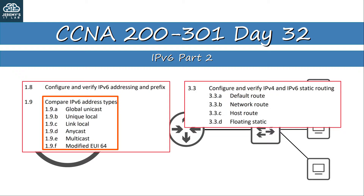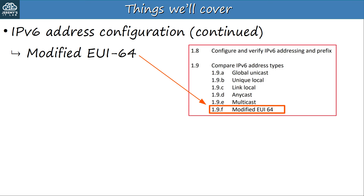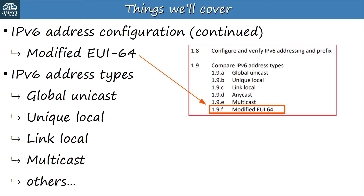Here's what we'll cover. First up we'll continue with the topic of IPv6 address configuration. I'll show you one more way to configure an IPv6 address on an interface, specifically using something called modified EUI-64, which is exam topic 1.9.f. Next I'll go into the other IPv6 address types: global unicast, unique-local, link-local, multicast, and some others. This is going to be a very information-dense video, but it's all important information so take your time, use the flashcards, and make sure you know the topics in this video.